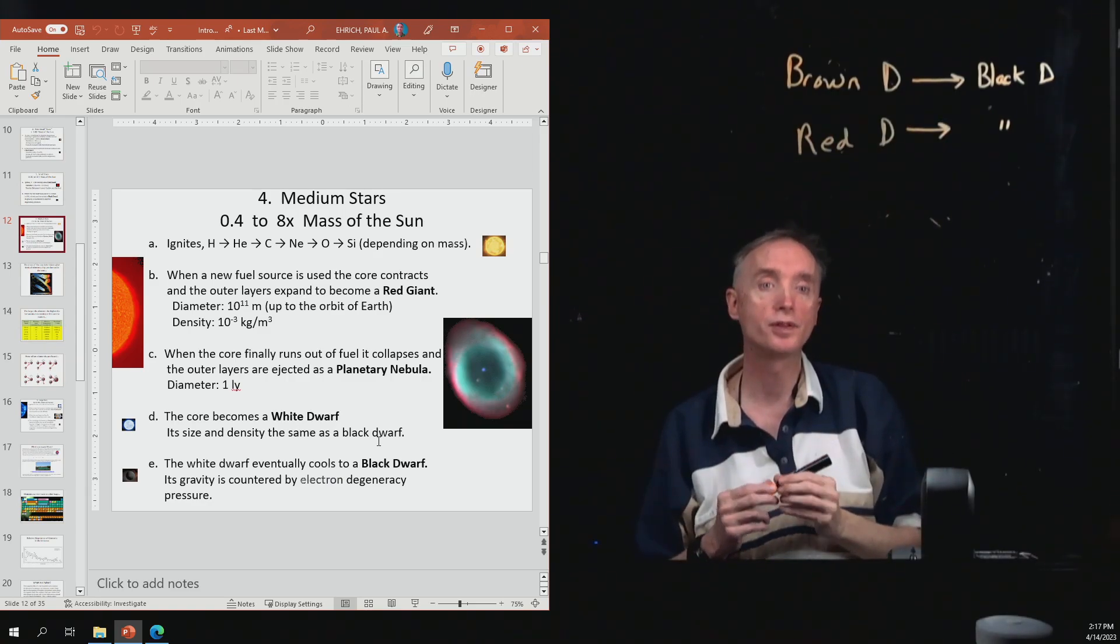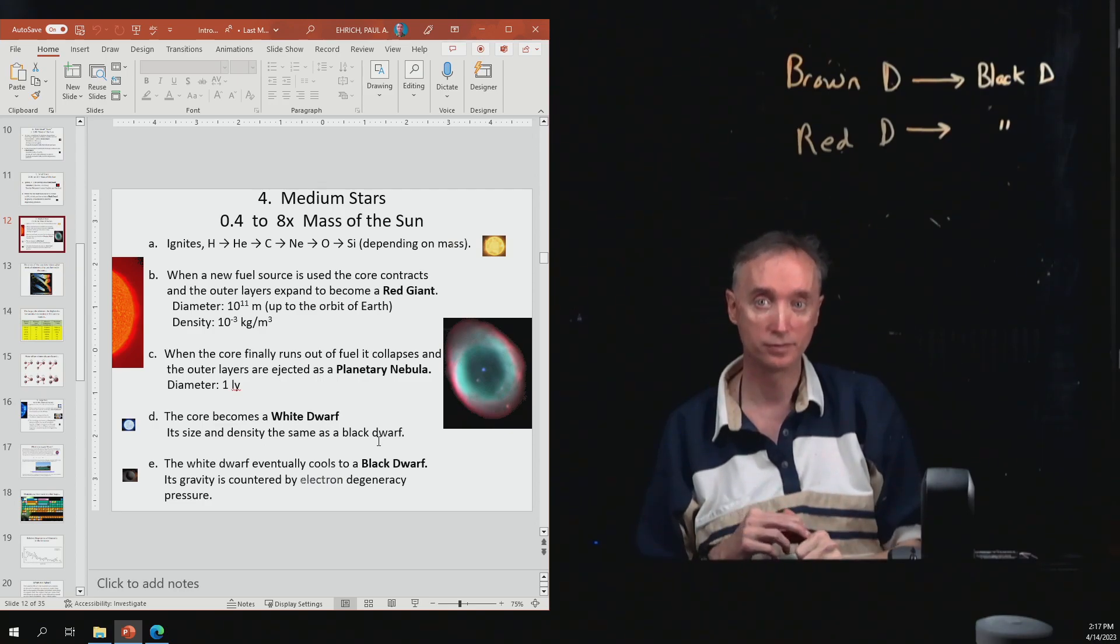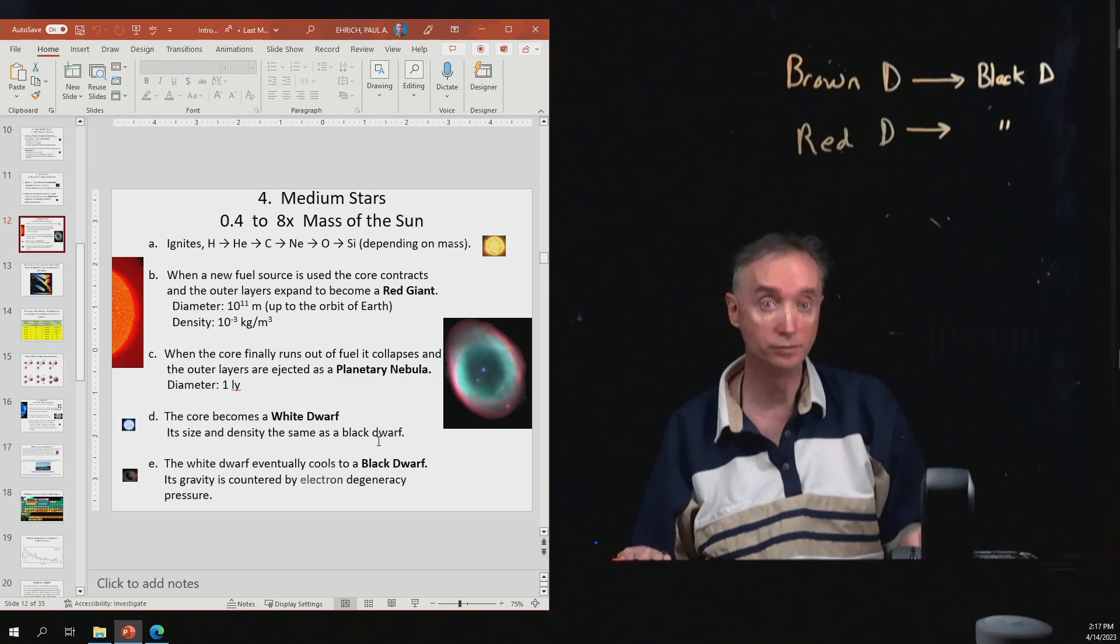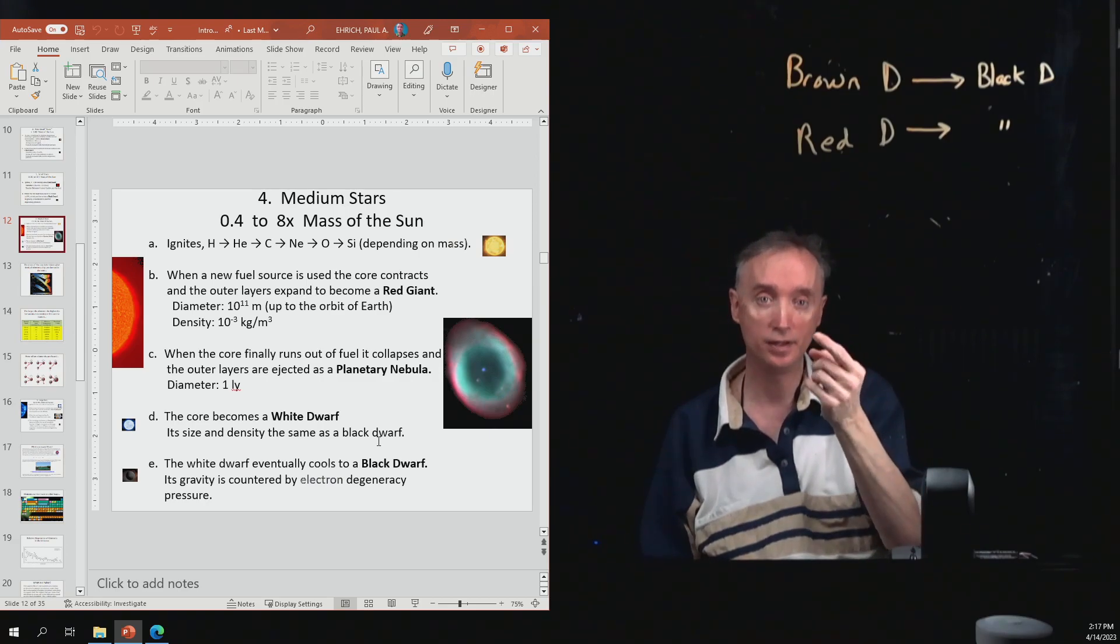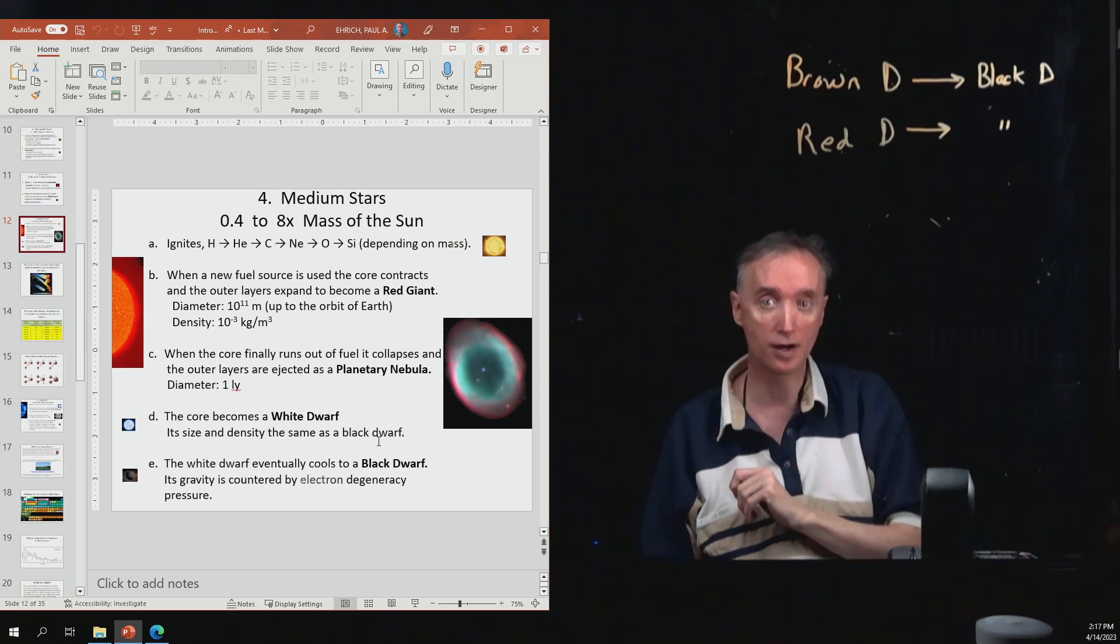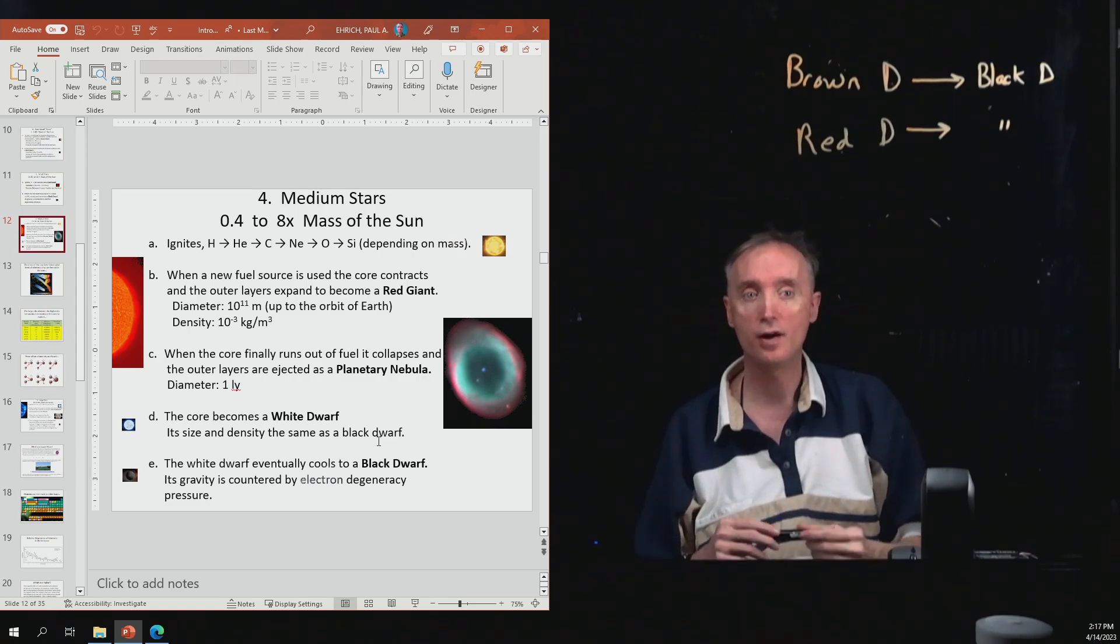So now we want to go with an even bigger star. These are going to be between 40 percent up to eight times the mass of the sun, and obviously the sun has a mass of one. So the sun is a member of this group of objects. They are going to ignite and convert hydrogen into helium.